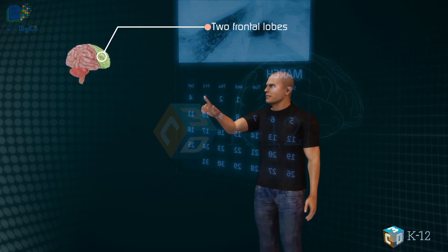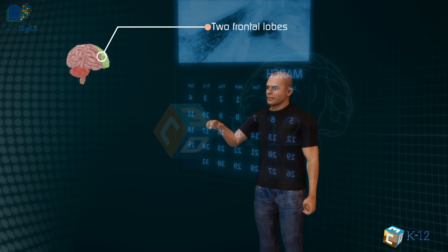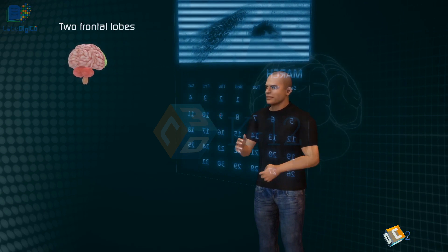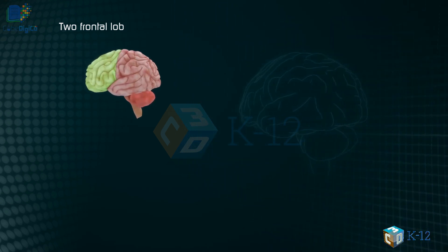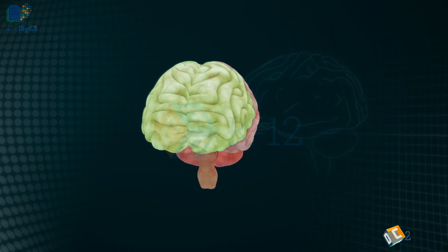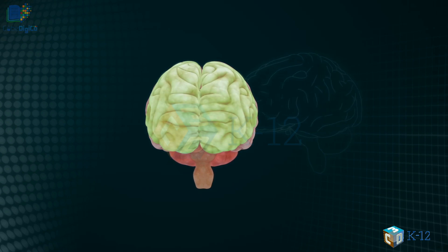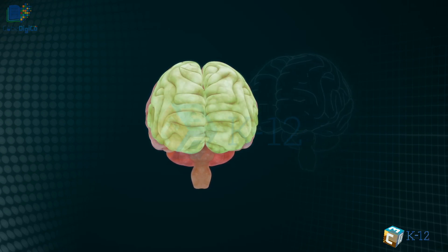When you plan a schedule, imagine the future, or use recent arguments, these two lobes are working. One of the ways the frontal lobes seem to do these things is by acting as short-term storage sites, allowing one idea to be kept in mind while other ideas are considered.